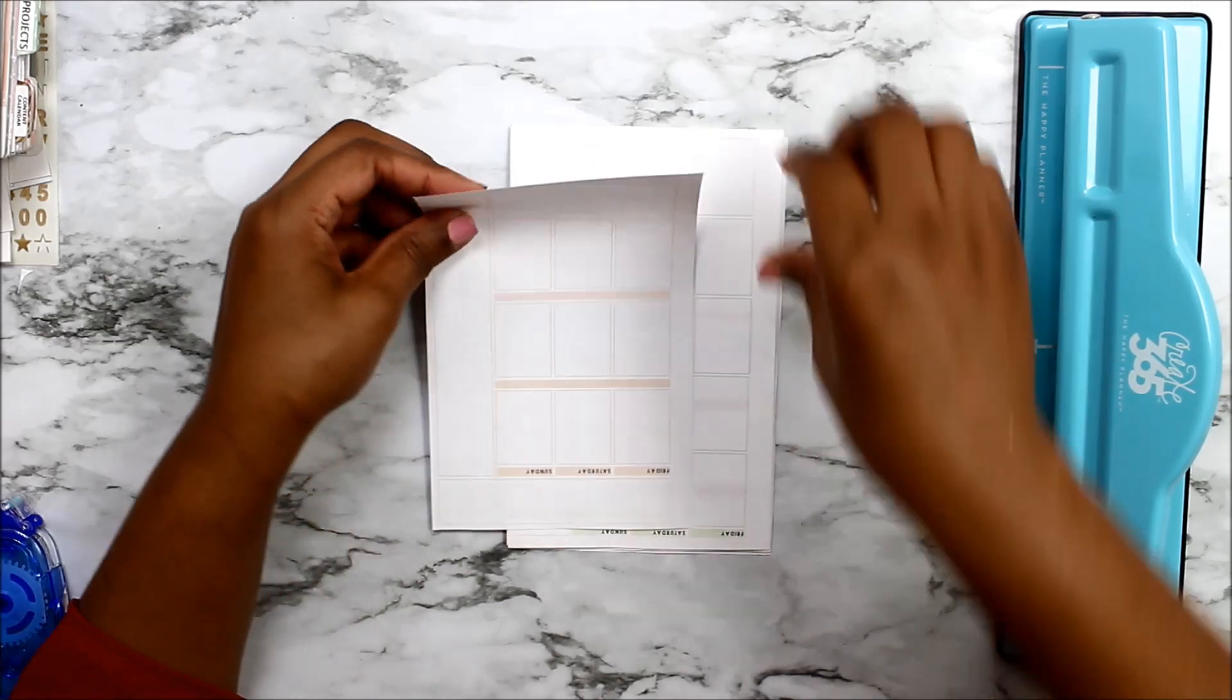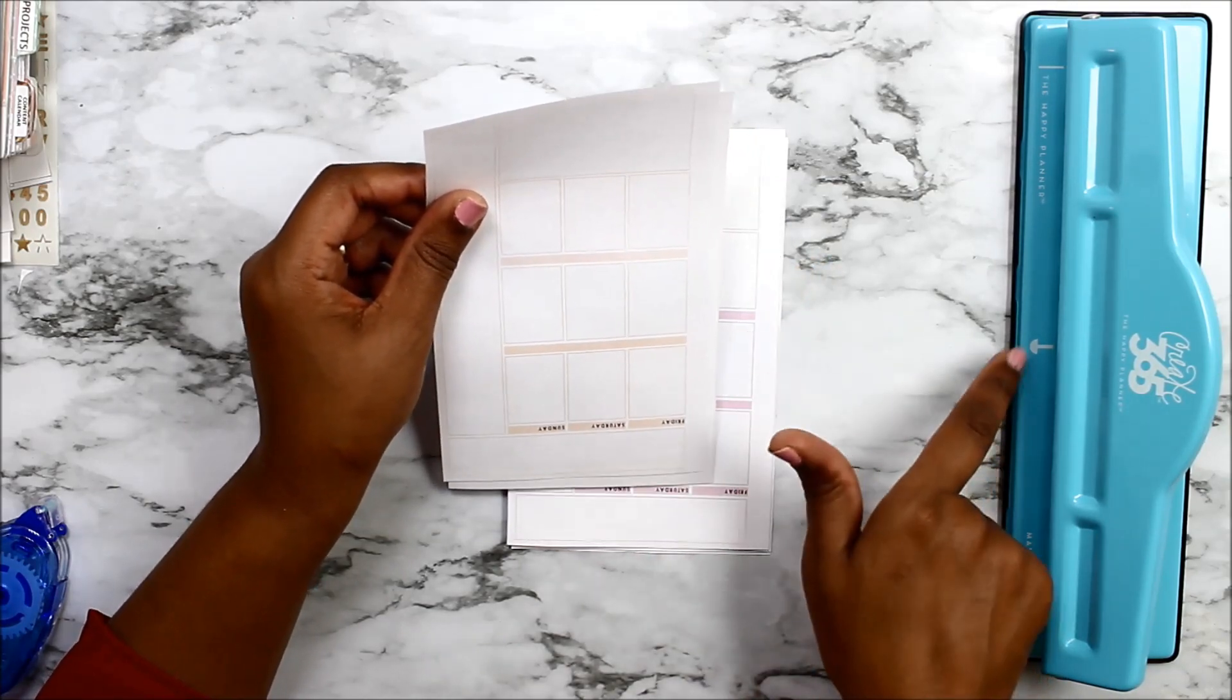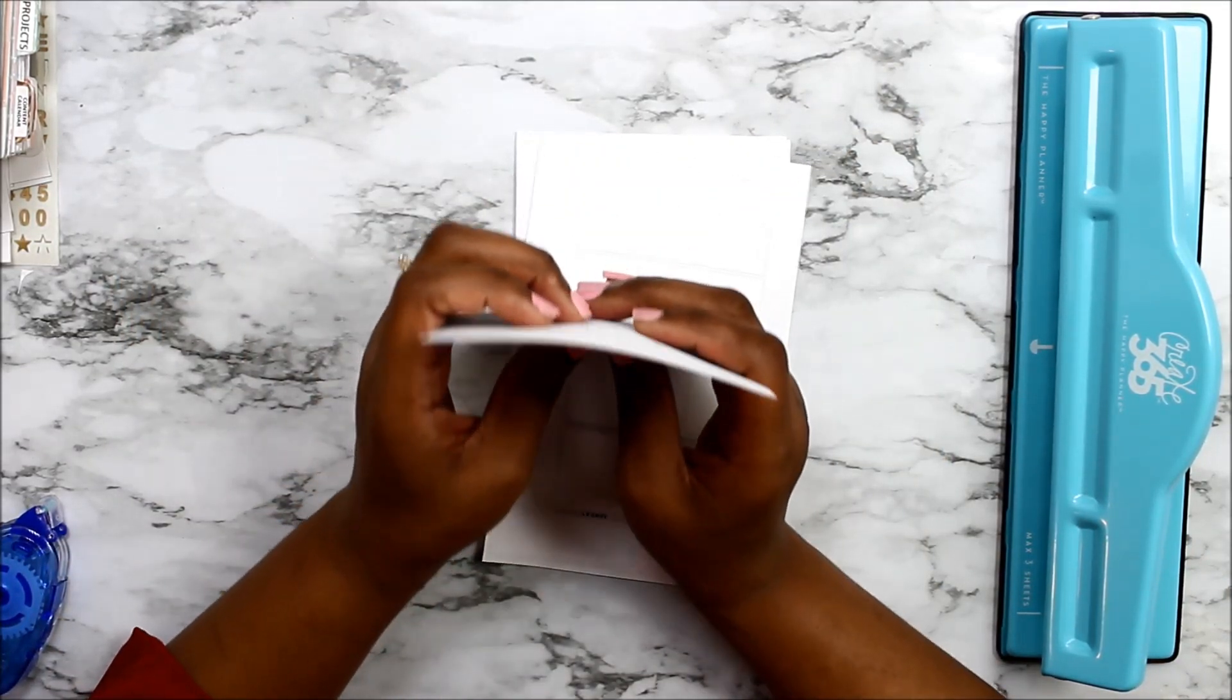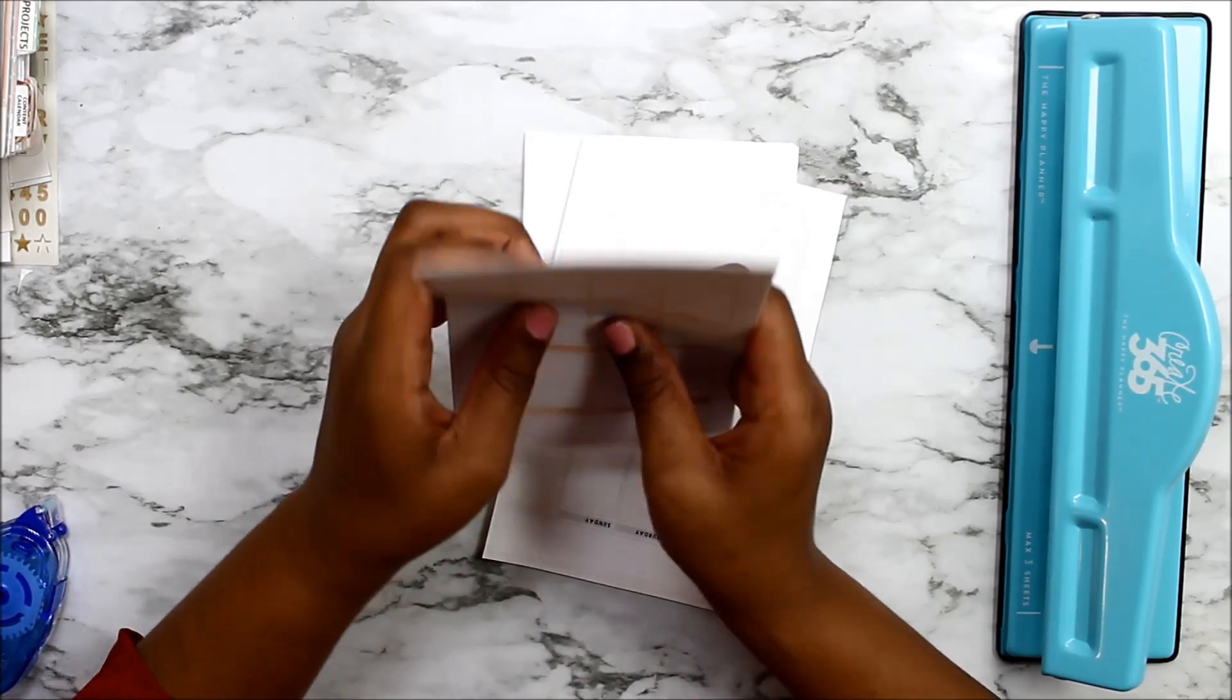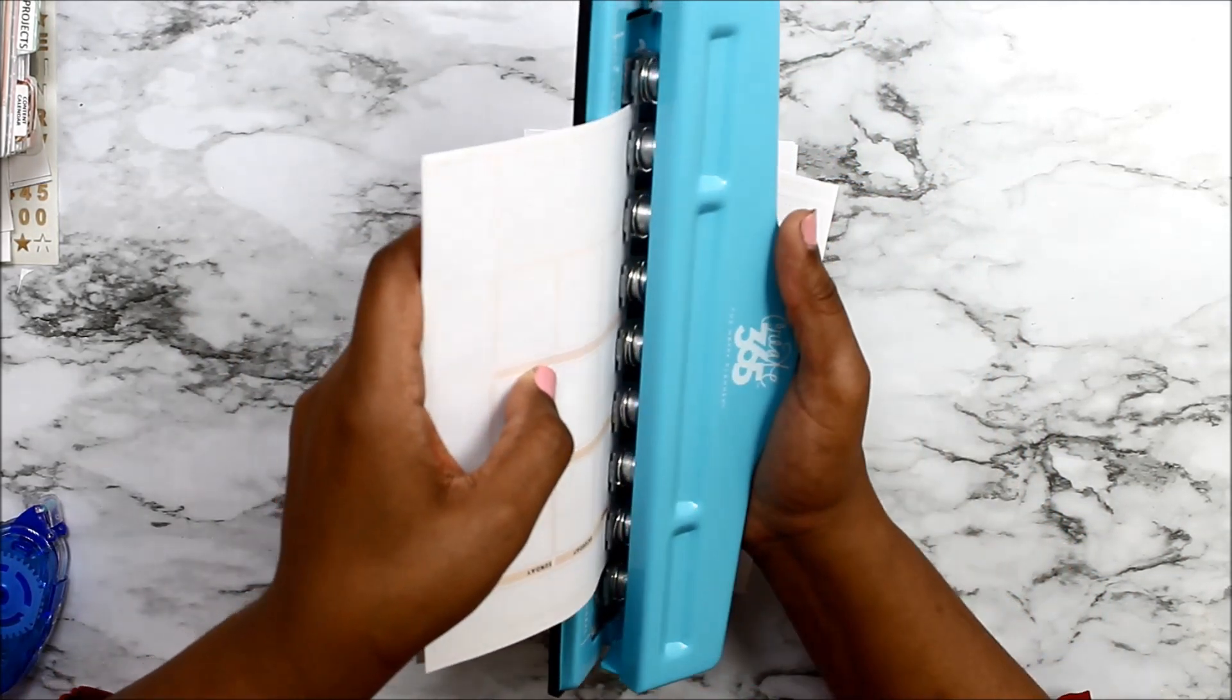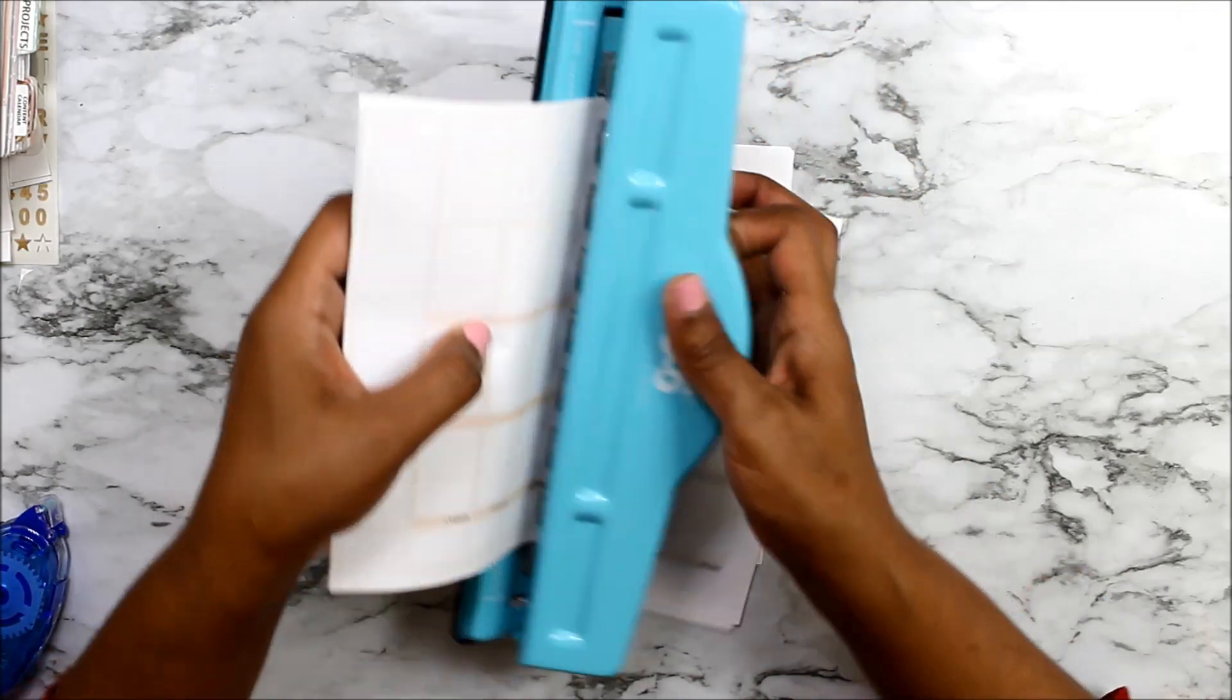Now that I have all these sheets cut out, I'm going to go ahead and punch them. Before you punch them, just make sure that edge with the margin is the side that's going into the puncher. I normally do four sheets at a time. They say do max three sheets, but I find you get a cleaner punch with four sheets. To line it up, I'm just putting it in between these two holes on each edge.